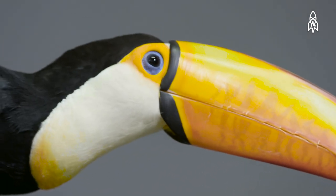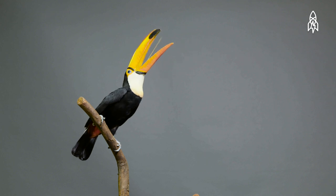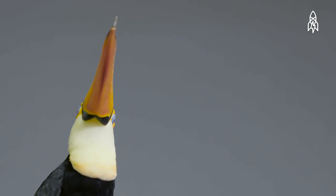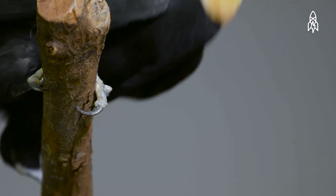They use their bill to pluck out-of-reach fruits from trees. Toco Toucans are considered extremely gregarious and social birds, living in flocks.